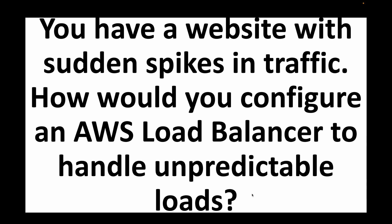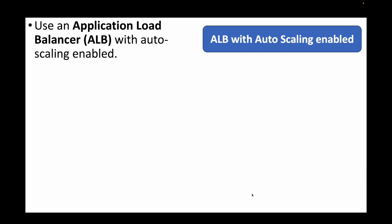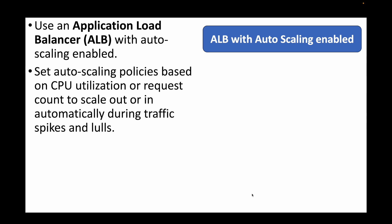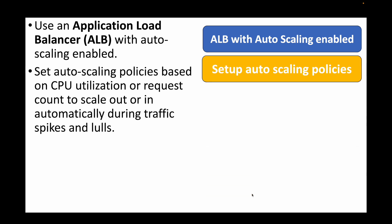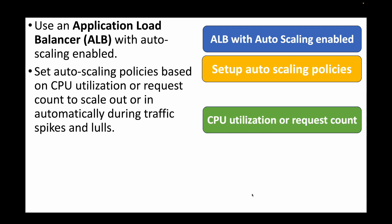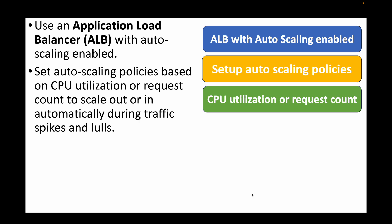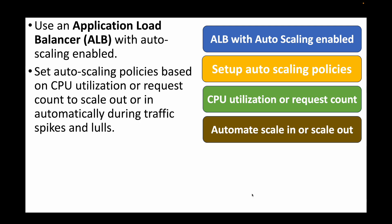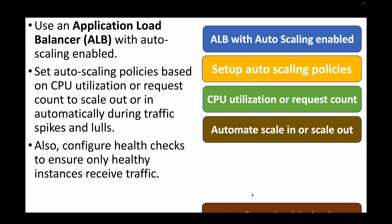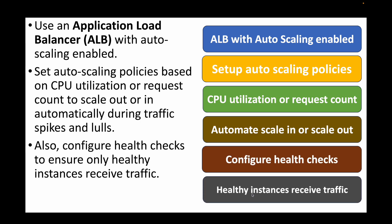The first question: you have a website with sudden spikes in traffic — how would you configure an AWS load balancer to handle unpredictable loads? For this we will make use of an Application Load Balancer and enable auto scaling as well. In auto scaling we set up scaling policies based on CPU utilization or request count to scale EC2 instances out or in. We also configure health checks so the load balancer only sends traffic to healthy instances.